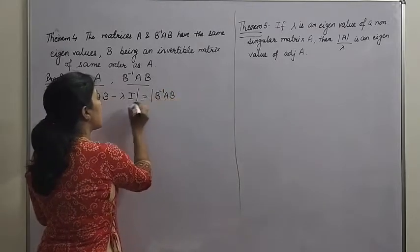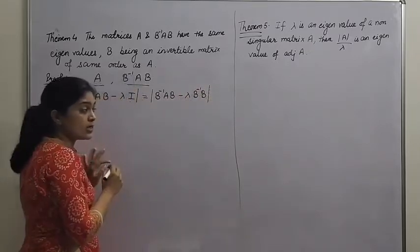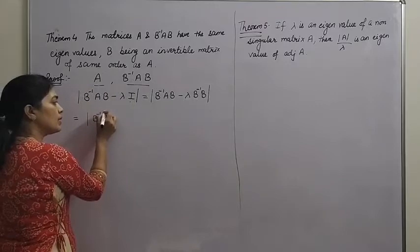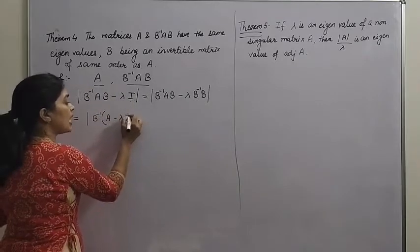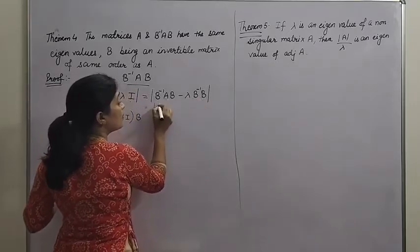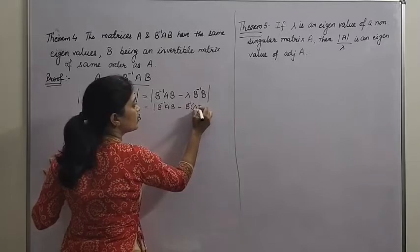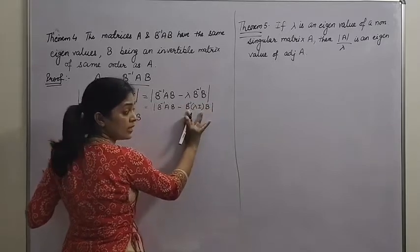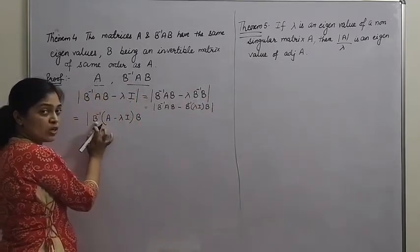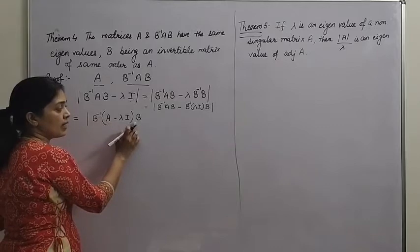Now the identity matrix I can be written as B⁻¹ · B. So det(B⁻¹AB - λI) = det(B⁻¹AB - λ B⁻¹B). Since lambda is just a scalar, this equals det(B⁻¹(A - λI)B). We can verify: B⁻¹AB - B⁻¹(λI)B = B⁻¹(A - λI)B. So we have reduced this to det(B⁻¹ · (A - λI) · B).